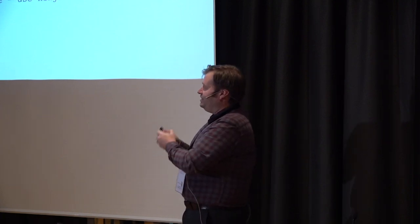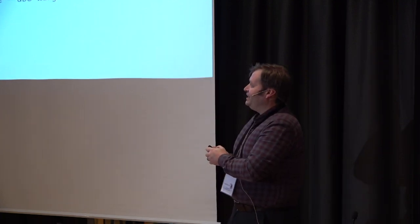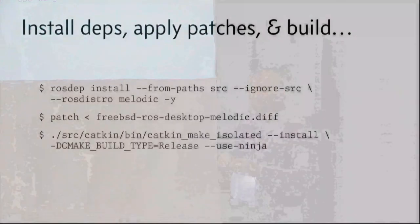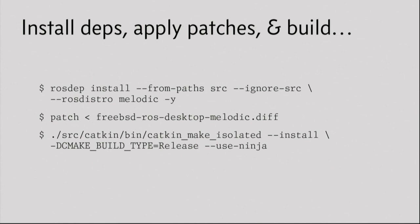Once all that's ready, you run catkin_make_isolated and tell it to use Ninja. The reason is that since this comes from Ubuntu it generates GNU makefiles and would call make, which on FreeBSD calls BSD make - and it eventually fails because of the disparity between GNU makefiles and BSD makefiles. Since I need another build tool anyway, I use Ninja because in the FreeBSD ports tree anything CMake-based is set up by default to use Ninja. Then you just sit around, have a cup of coffee, and everything should build.